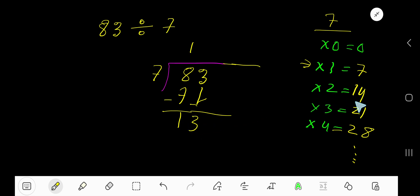2 times 14 which is greater, so 1 times 7 is 7. Now you need to subtract 7 from 13, so you're getting 6, right? Now your answer is 11 remainder 6.